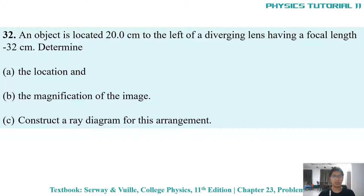An object is located 20cm to the left of a diverging lens having a focal length negative 32cm. Determine A, the location and B, the magnification of the image. And then C, construct a ray diagram for this arrangement.